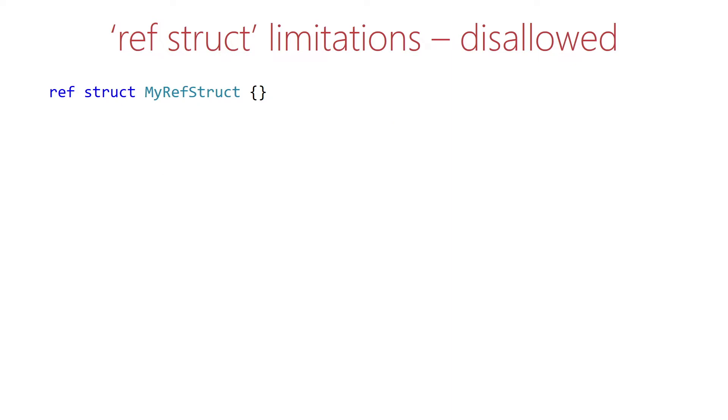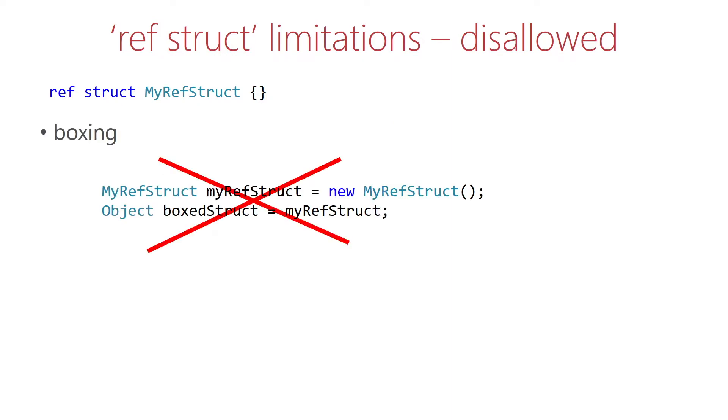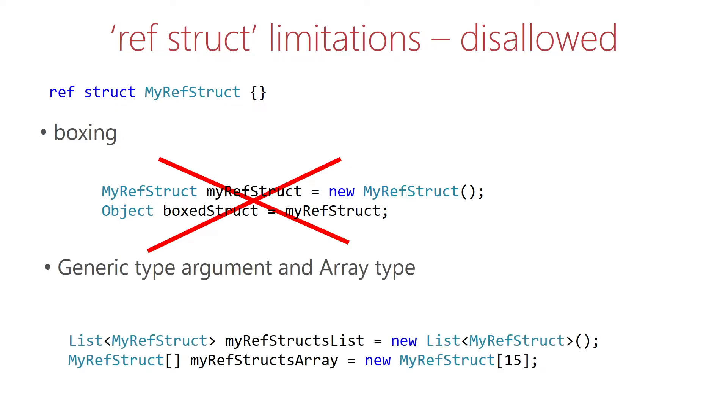Plus we cannot do anything with a ref struct that would cause boxing, so this code is also invalid. Furthermore, we can't use it as a generic type argument and it cannot be a type of an array either. So the point is, the compiler prevents us from putting the ref struct instance onto the heap, which is kind of a major limitation.